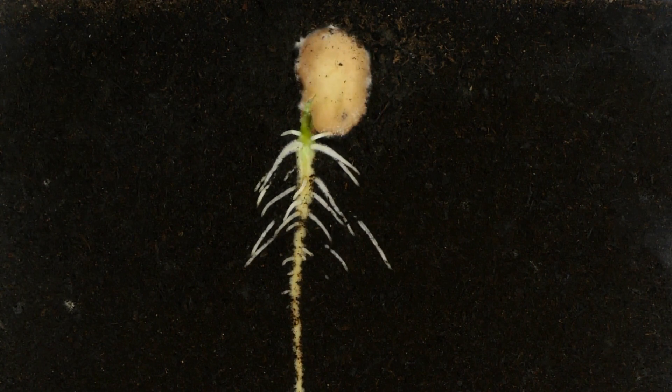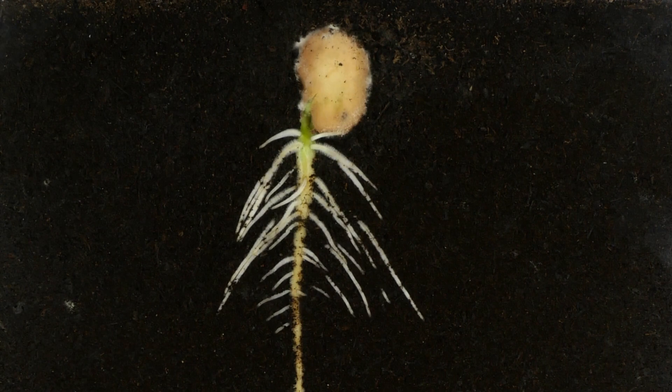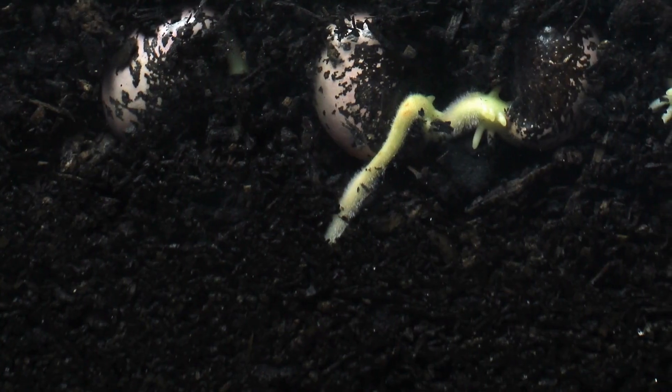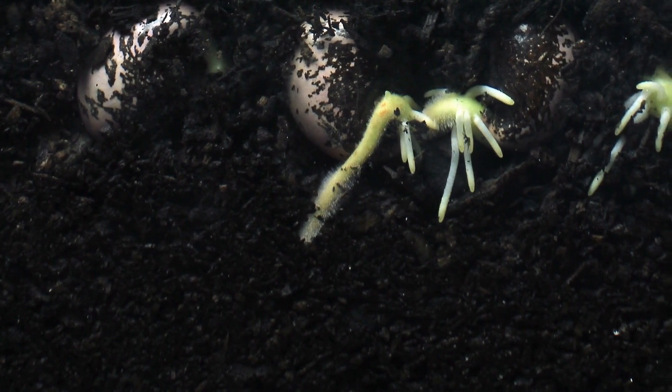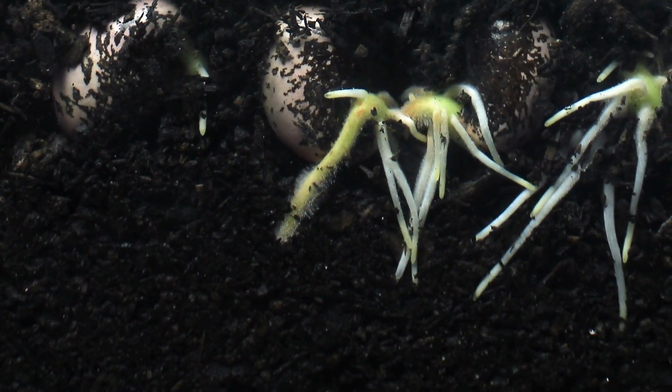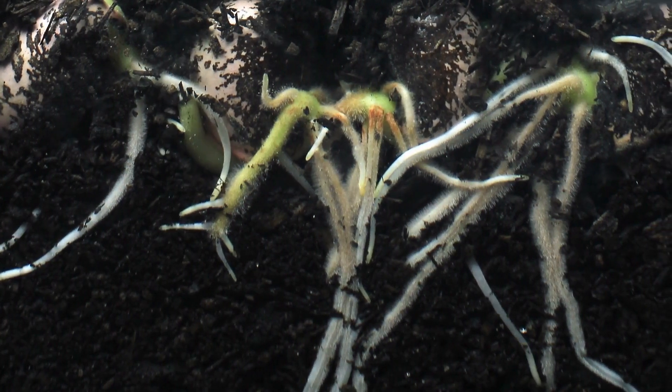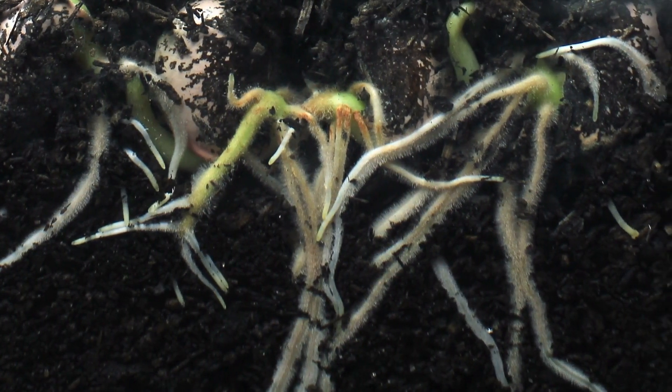The first sign of life comes when the seed coat cracks open and the roots emerge. These roots are like the plant's anchors, digging down into the soil to hold it steady. They're not just there for support, though. Tiny root hairs spread out from the roots, helping them absorb water and nutrients from the soil.